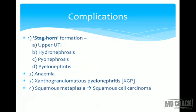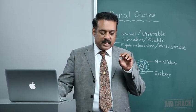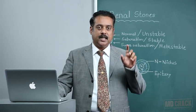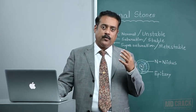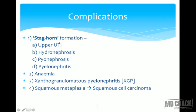Complications associated with renal stones include staghorn formation. A staghorn stone grows into the various pelvicalyceal system, taking the shape of a staghorn - hence the name. Its implications include hydronephrosis due to obstruction blocking urinary outflow, upper urinary tract infection, and the patient will eventually develop pyonephrosis and pyelonephritis.